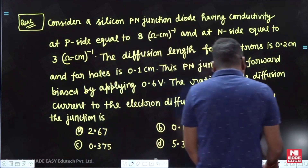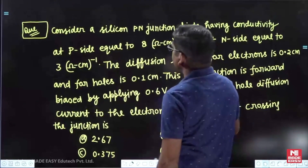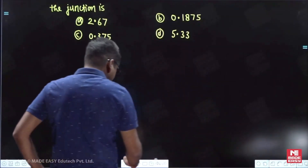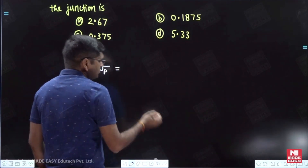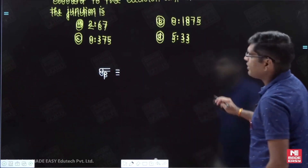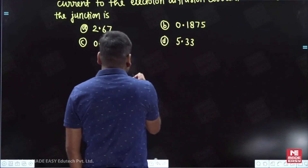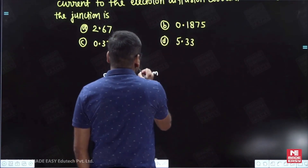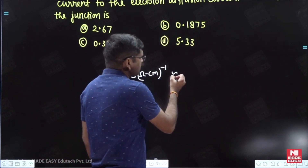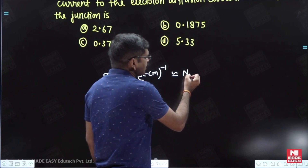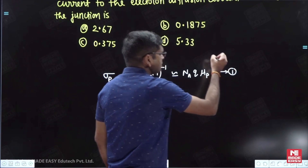First, let us write the information given to us. The conductivity at the P side, sigma_P, is equal to 8 ohm-centimeter inverse. We know that the conductivity of a P-type semiconductor can be written as acceptor concentration Na times Q times mobility of the P-type semiconductor (mu_p). Let this be equation number 1.